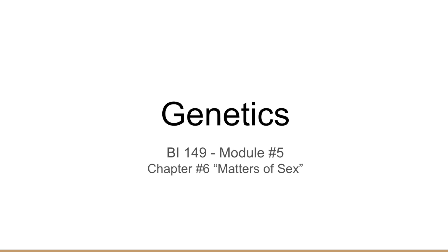In Chapter 4, we looked at single gene disorders. We spent time considering simple inheritance patterns, autosomal dominant patterns of inheritance, autosomal recessive patterns of inheritance. Then in Chapter 5, we moved on to discuss exceptions to these rules of inheritance — things that went beyond the scope of Mendel's laws.